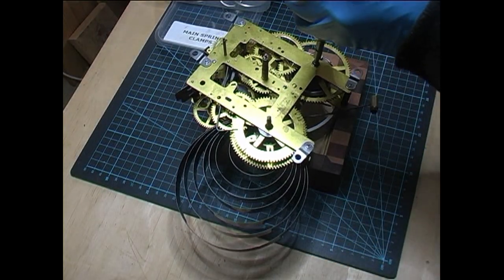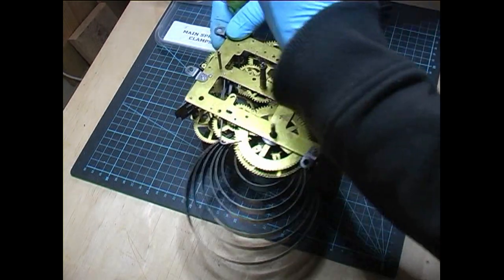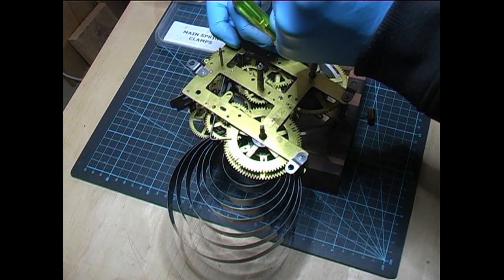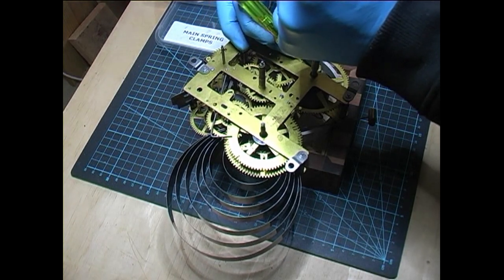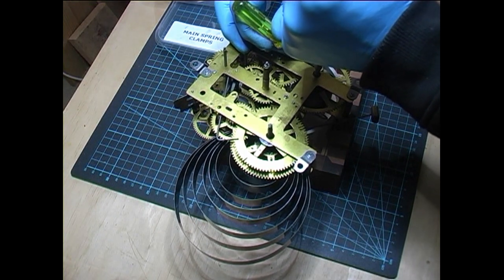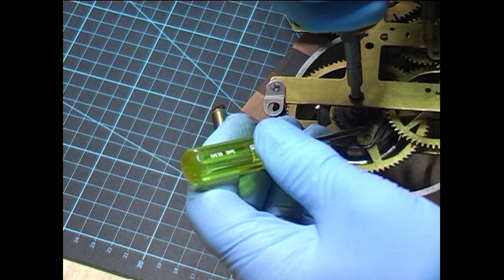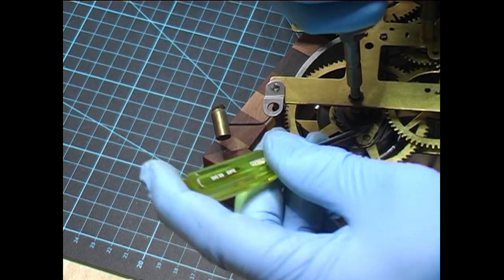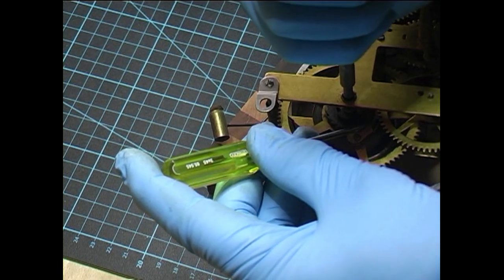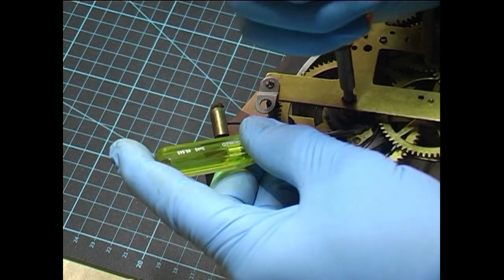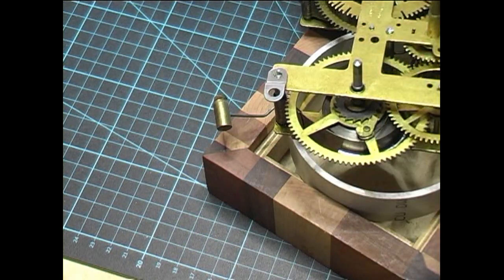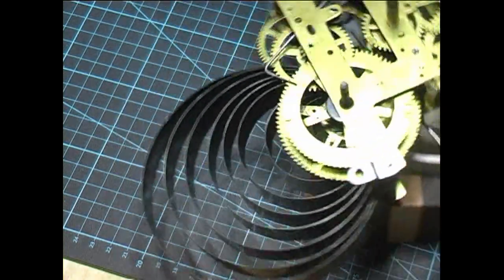Put the let down tool over the winding arbor. Tighten it up just slightly. And then, getting a screwdriver into the click, we let the pressure out on the spring. Hold the click back and slowly let the pressure out of the spring until the clamp takes all the pressure. There it is. That spring is now safe to remove.